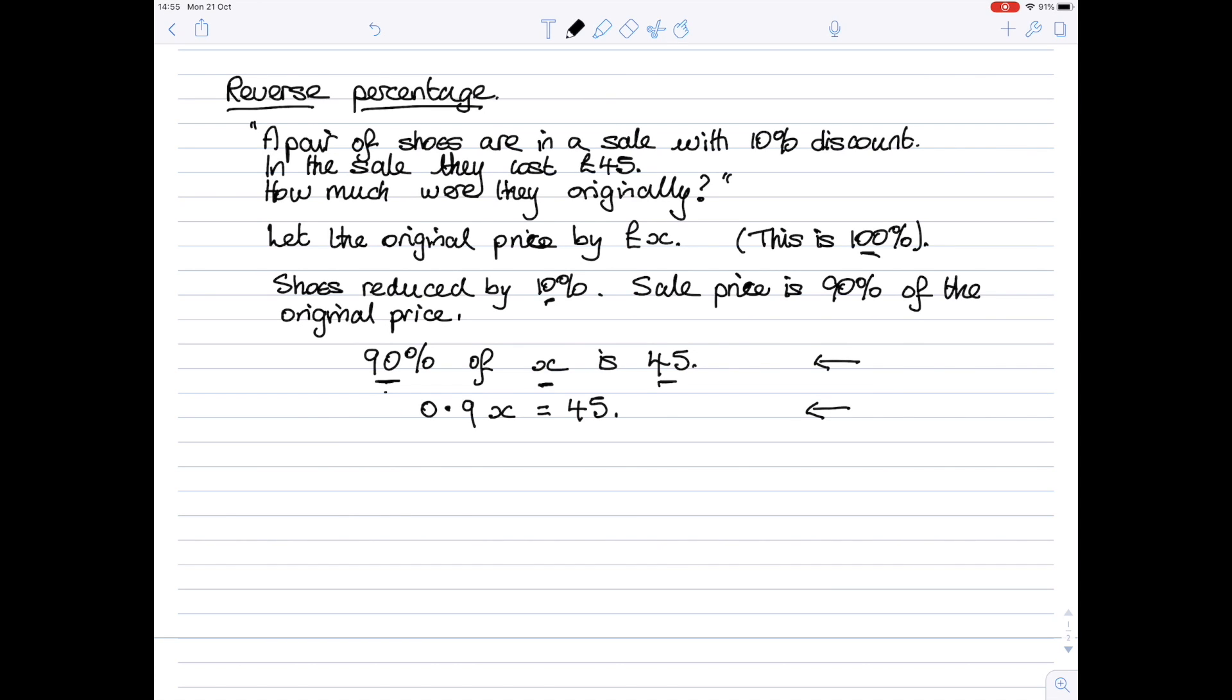Now you have a very simple equation to solve. x is equal to 45 over 0.9, which is 50. So the original price of the shoes was £50.